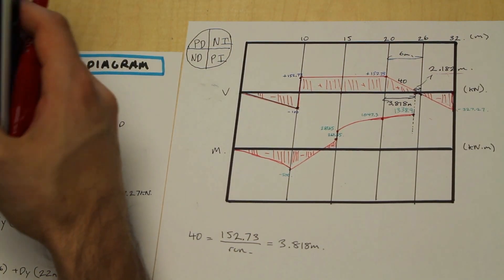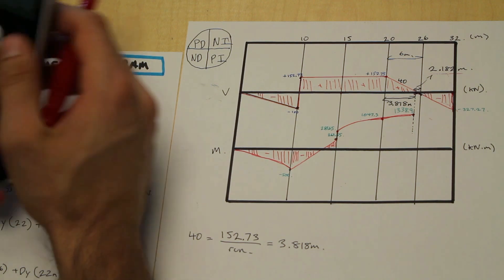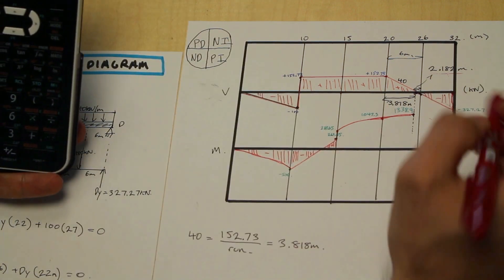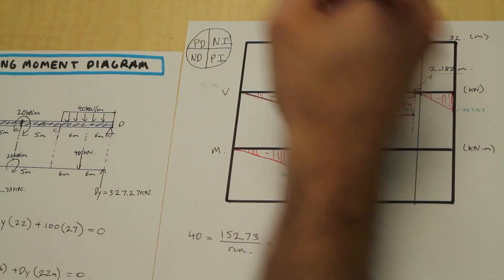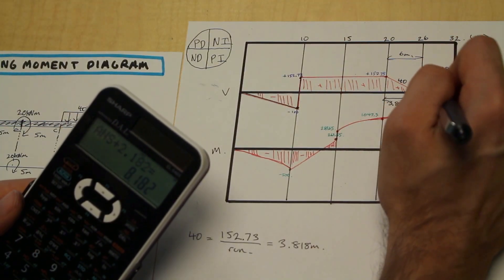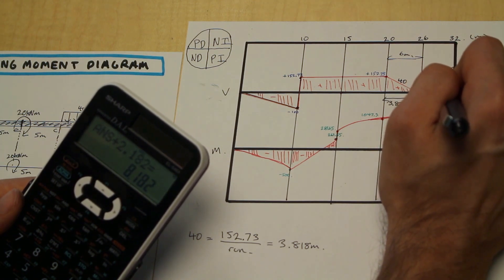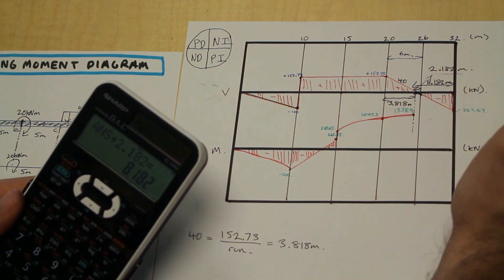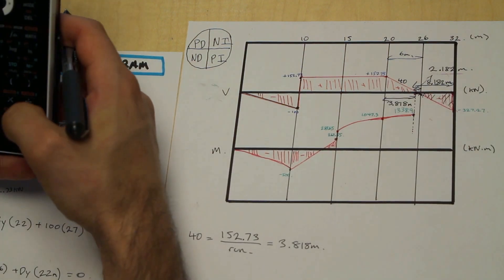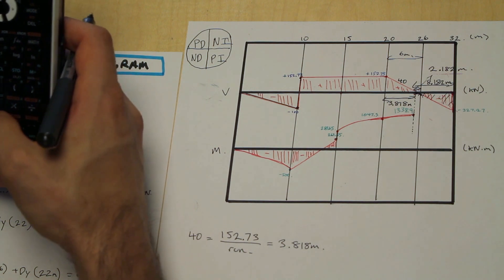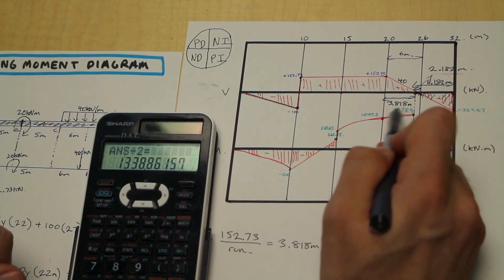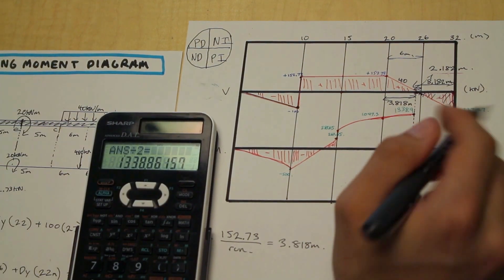So let's try it. So we have 32 minus 26. That's going to be 6. And plus 2.182, 8.182. So I just want to draw this in for you. This distance here is 8.182 meters. So how do we find the area of the triangle? This triangle here, simple. 8.182 times 327.27 divided by 2. And that should give you exactly the same number as we have here, which it does. It's 1338.9.